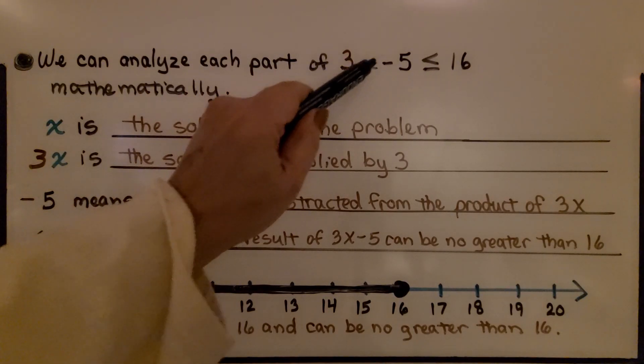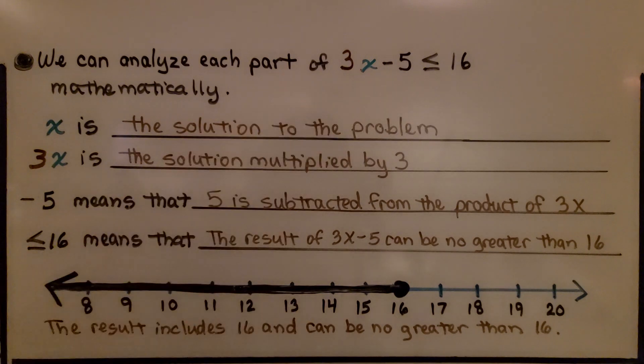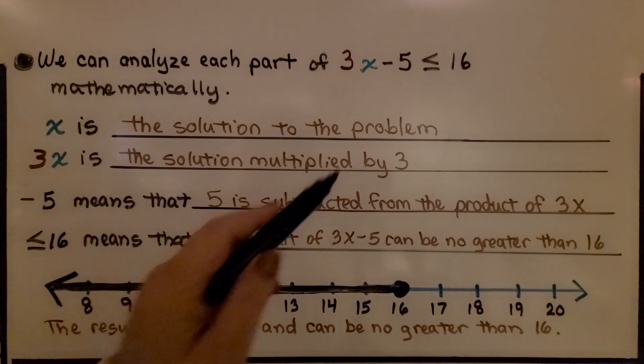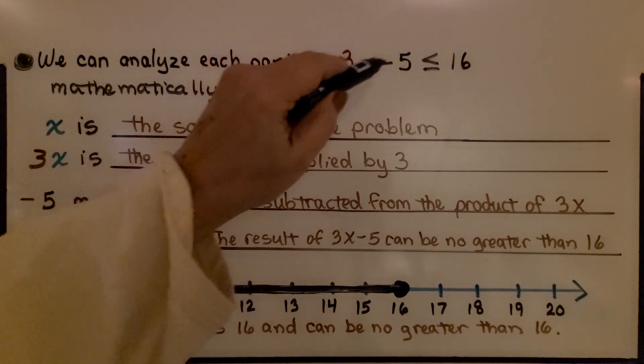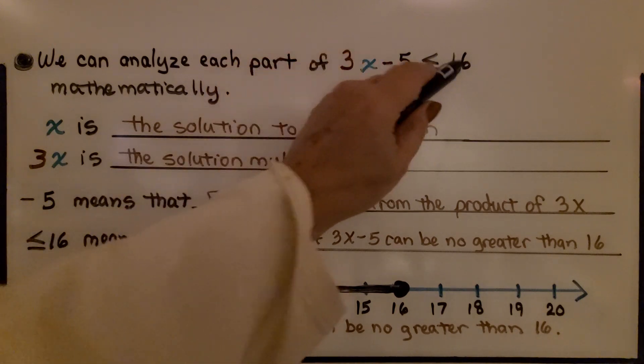We have this inequality. 3x minus 5 is less than or equal to 16. We can analyze each part of this inequality mathematically. x is the solution to the problem. 3x is the solution multiplied by 3. Minus 5 means that 5 is subtracted from the product of 3x. Less than or equal to 16 means that the result of 3x minus 5 can be no greater than 16.